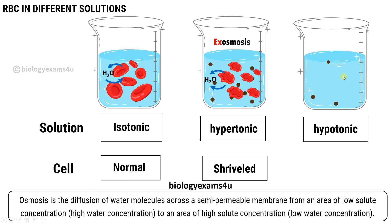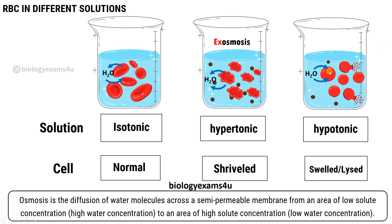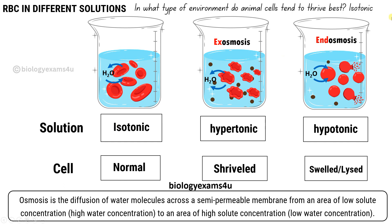Now we are going to place RBCs in a hypotonic solution. In hypotonic solution, the solute concentration inside the cell is high compared to the external solution. So water enters into the cell by endosmosis. The cell swells, and at a later stage it bursts or undergoes lysis, as you can see here. This is due to endosmosis — the entry of water into the cell from the outside hypotonic solution. In conclusion, the best environment for an animal cell is the isotonic environment, where the cell shape remains normal.